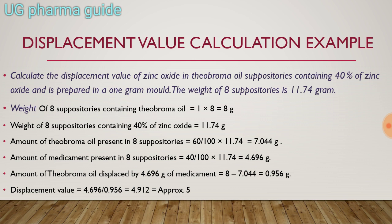Amount of theobroma oil displaced by 4.696 gram of medicament = 8 − 7.044 = 0.956 gram. Therefore, displacement value = 4.696 / 0.956 = 4.912, which we can approximately take as 5. So the displacement value of zinc oxide is 5.